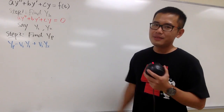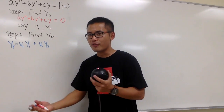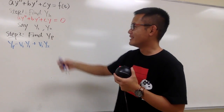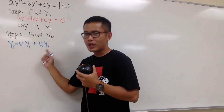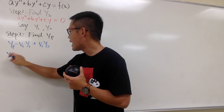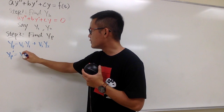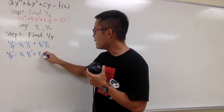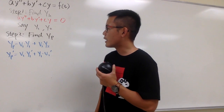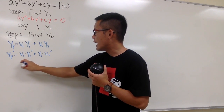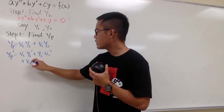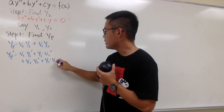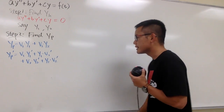We have this general form and we need to differentiate it twice, then plug in. Applying the product rule for the first derivative: yp' = v1·y1' + y1·v1' + v2·y2' + y2·v2'.